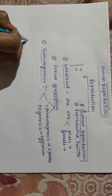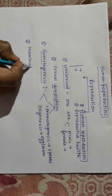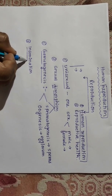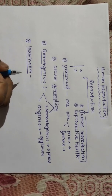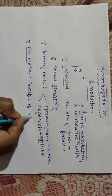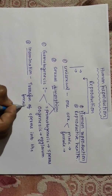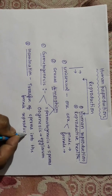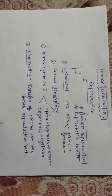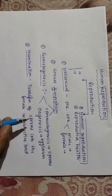The second phase is called insemination. Insemination means the transfer of sperms into the female reproductive tract. When male sperms are produced, they have to be transferred into the female reproductive tract so that fertilization can take place.